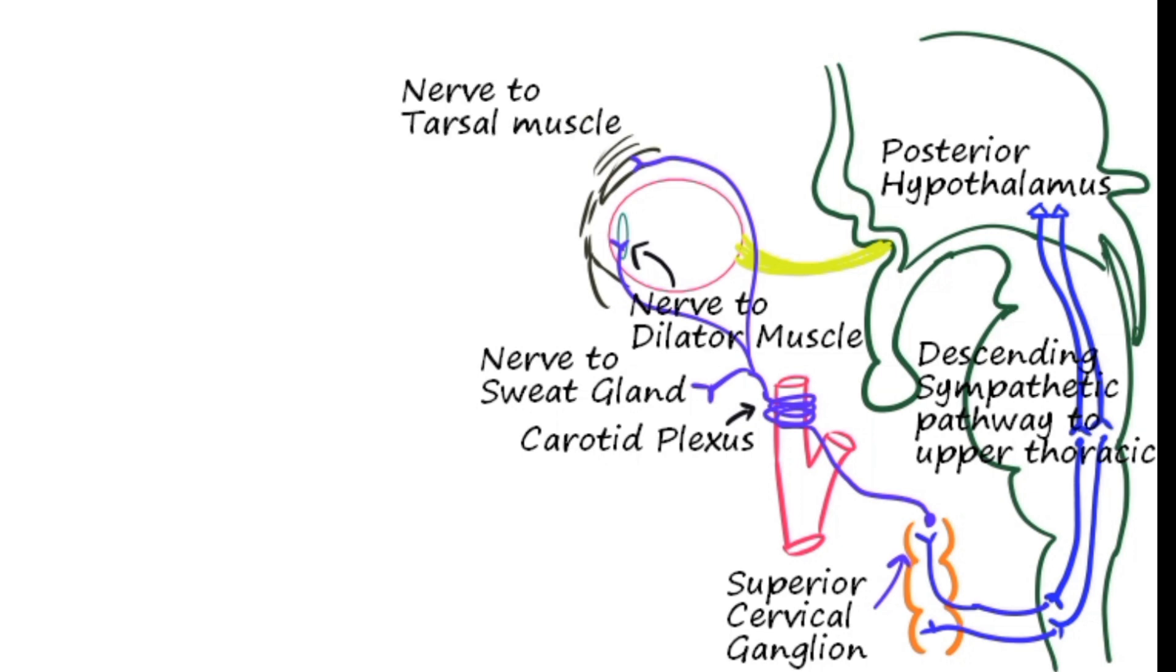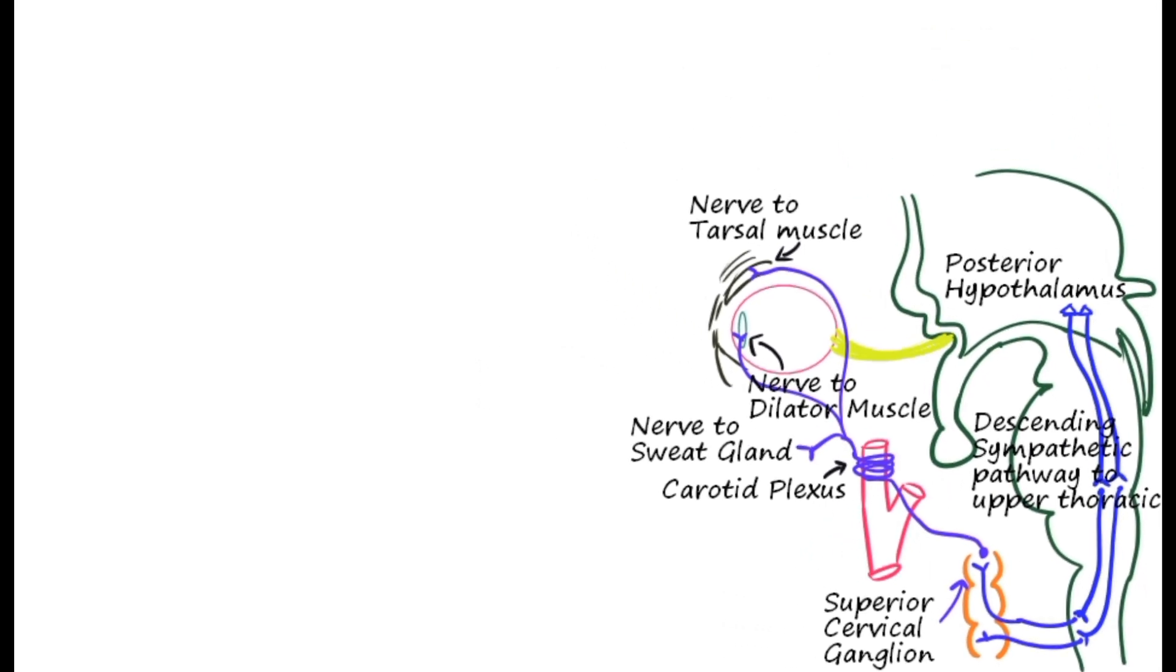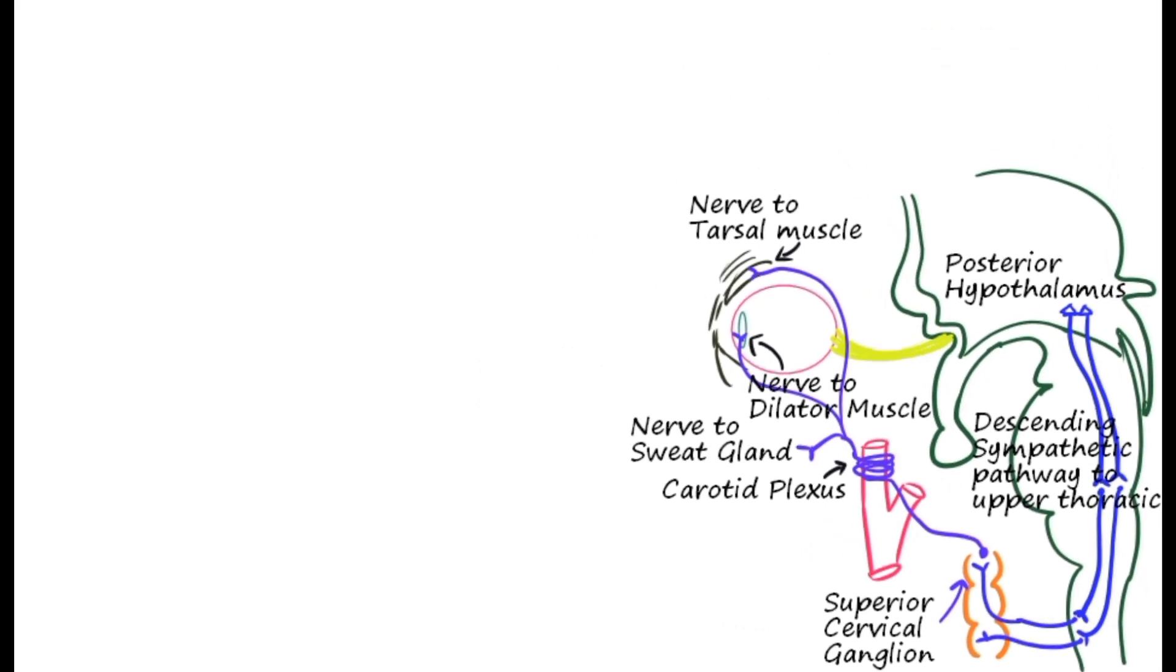And finally the nerve or branch of the post-ganglionic sympathetic fiber to the tarsus muscle. This is the basic pathway involved in Horner syndrome. Any disruption of the entire pathway would lead to Horner syndrome.